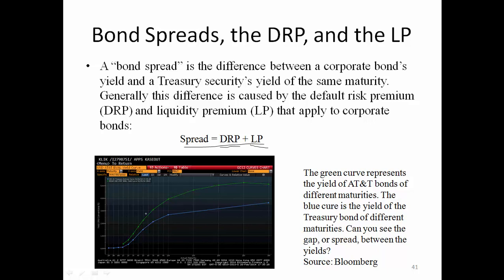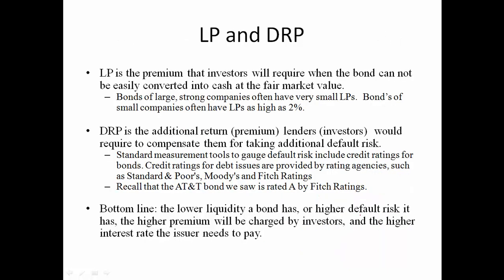Looking at the green curve showing the yield of AT&T bonds of different maturities versus the blue curve showing treasury bond yields of different maturities — for example, at 15-year maturity, the AT&T bond yield versus the 15-year treasury bond yield — the difference between them is called the spread.